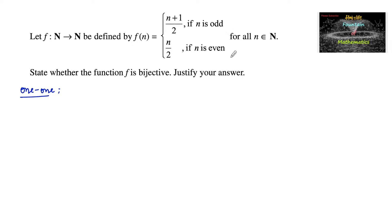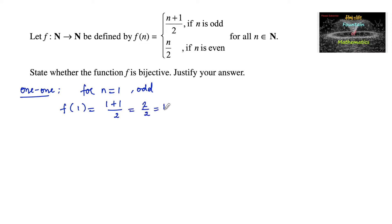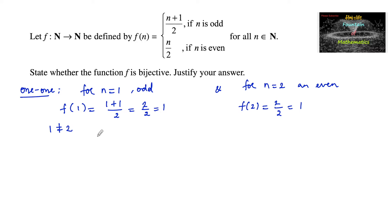For n odd we use (n+1)/2, and for n even we use n/2. Consider n=1 (odd): f(1) = (1+1)/2 = 2/2 = 1. Now consider n=2 (even): f(2) = 2/2 = 1. So even though 1 ≠ 2, f(1) and f(2) are both equal to 1. Hence f is not 1-to-1 — that is, f is not injective.